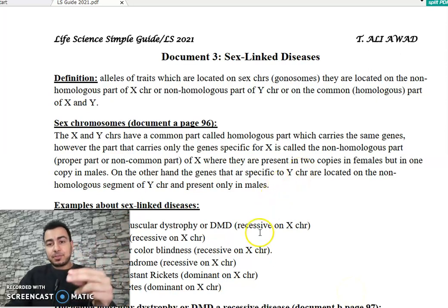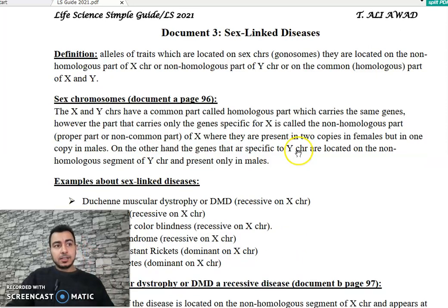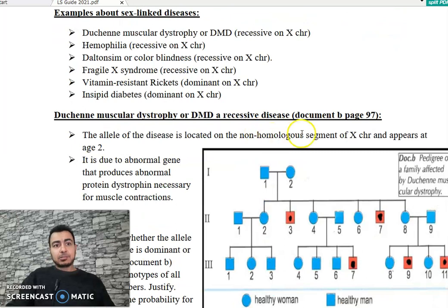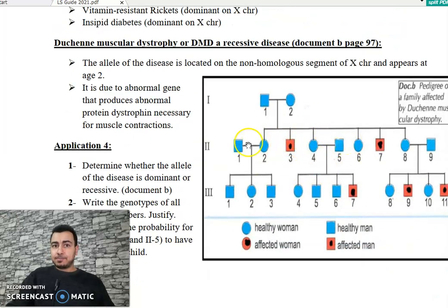Now we are going to solve the risk in case of gonosomal recessive diseases located on the non-homologous part of X chromosome. Let's take the following pedigree about Duchenne muscular dystrophy. Duchenne muscular dystrophy is a hereditary disease located on X chromosome, and it's a recessive disease.